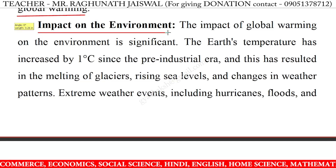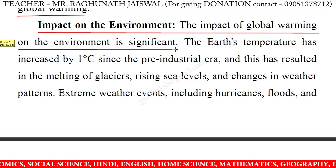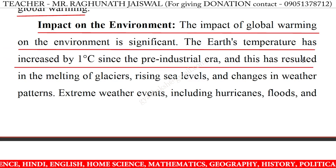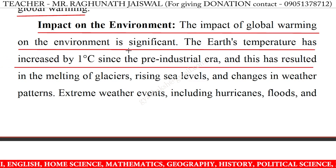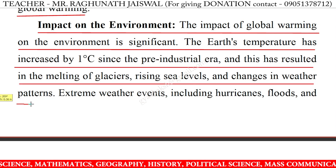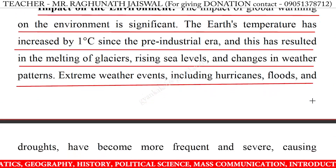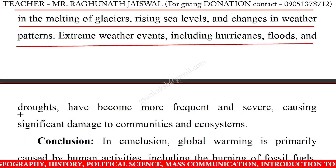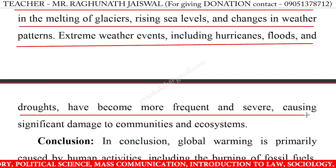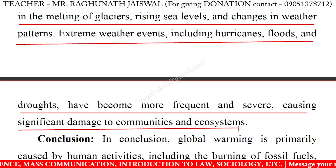Impact on the environment. The impact of global warming on the environment is significant. The Earth's temperature has increased by one degree Celsius since the pre-industrial era and this has resulted in the melting of glaciers, rising sea levels and changes in weather patterns. Extreme weather events including hurricanes, floods and droughts have become more frequent and severe, causing significant damage to communities and ecosystems.